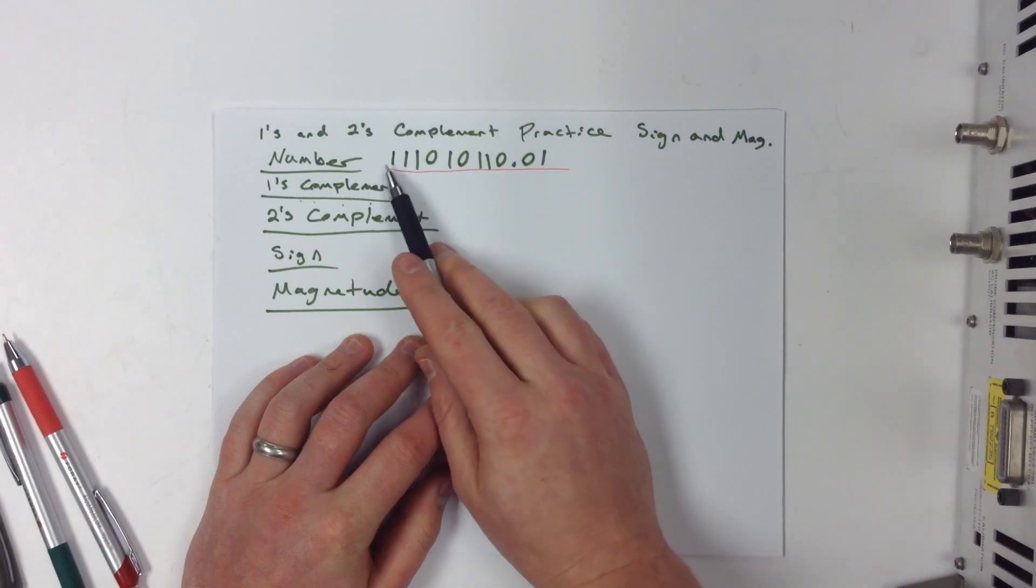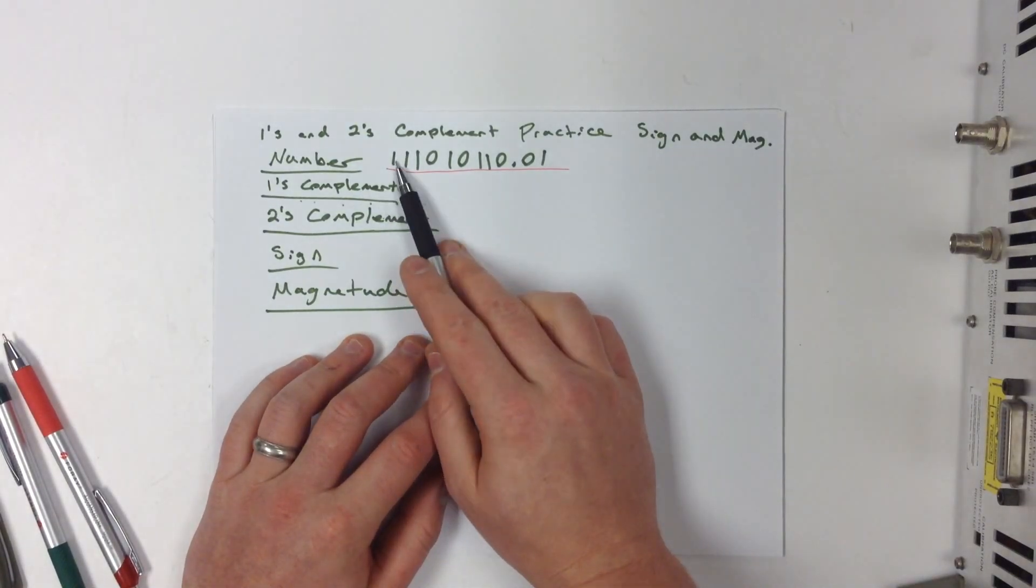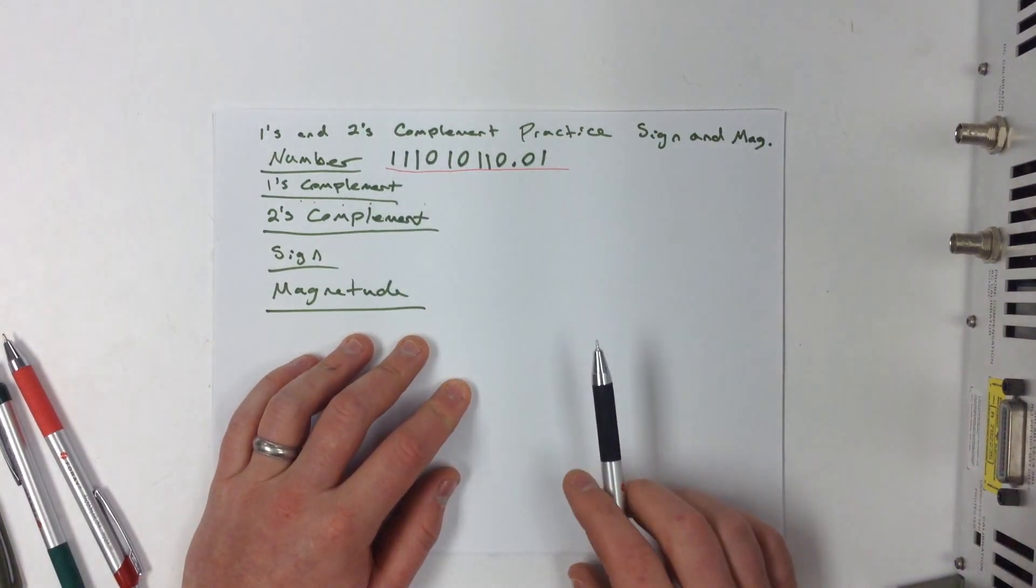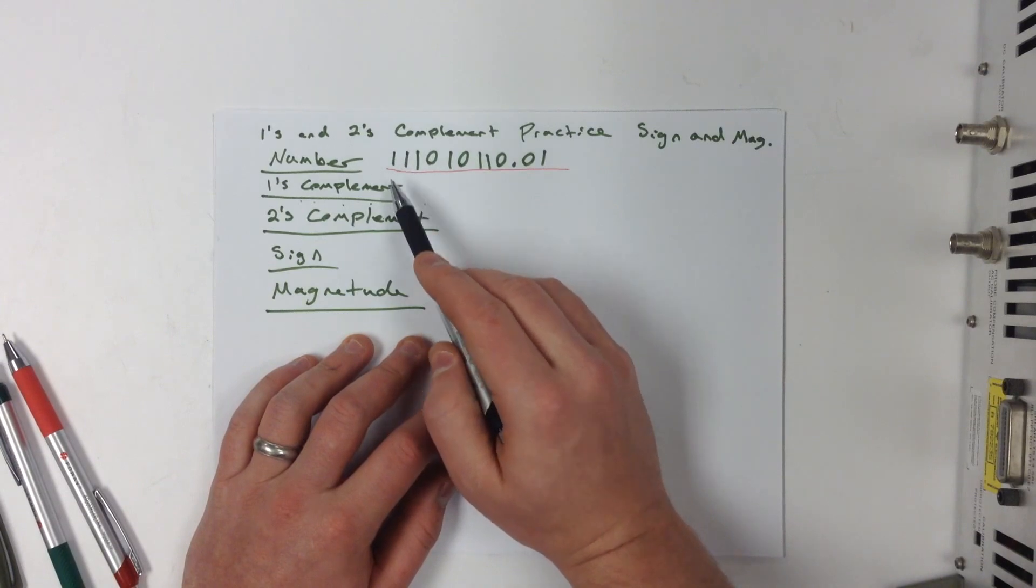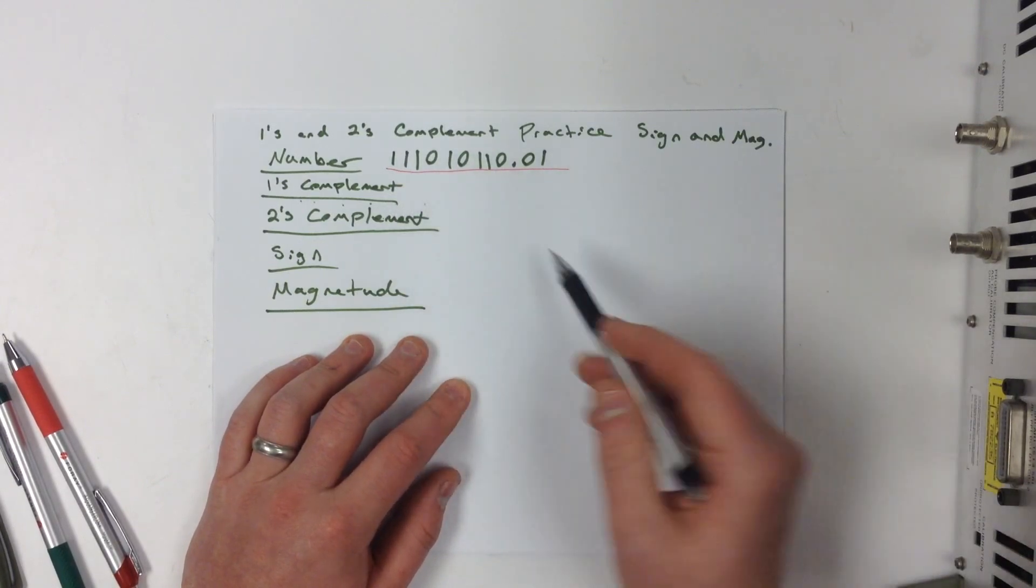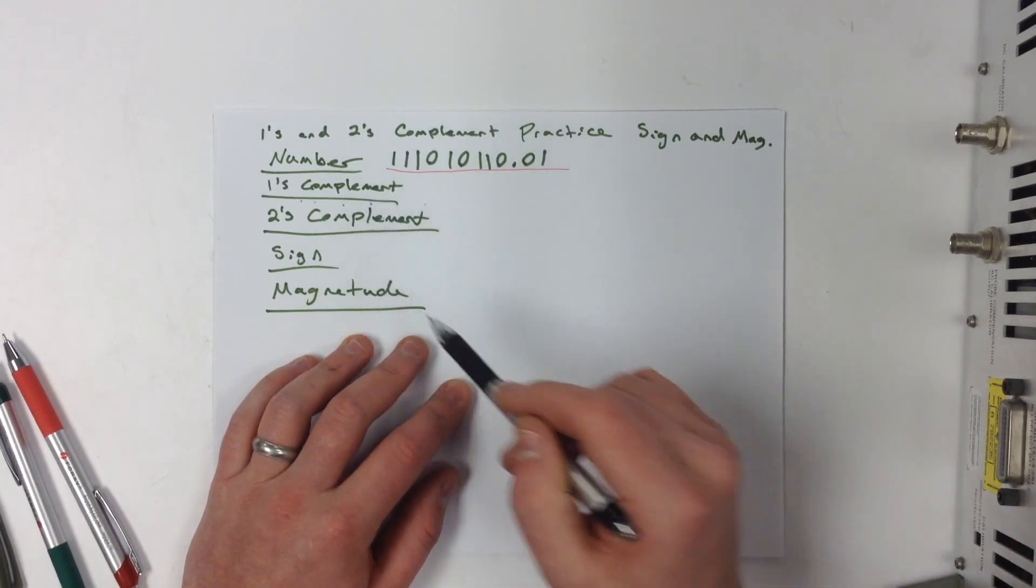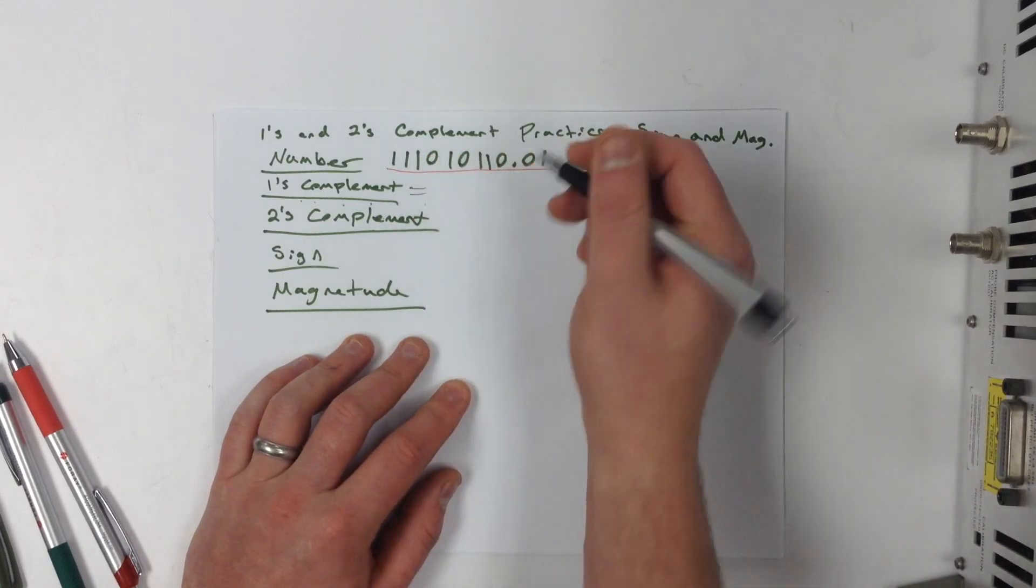With 1's complement, given an unsigned binary number, we can find the 1's complement of that number just by flipping all the bits. And when I say flipping the bits, I mean you change a 1 to a 0, and you change a 0 to a 1. So let's go ahead and write down the 1's complement of this number.